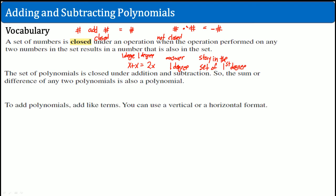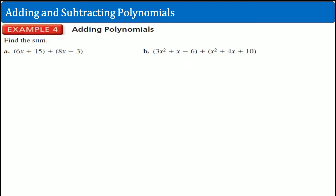It stays in the set of first degree. And this is also true if you subtract. This is what I mean by it's closed under addition and subtraction. So to add a polynomial, you just add the like terms, and there are two ways to do it: vertical and horizontal. Make sure you understand this idea — the set of polynomials is closed under addition and subtraction.